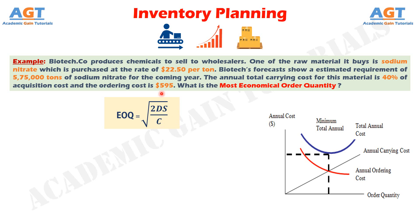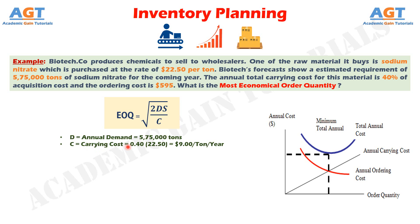Let's identify the values from the question. The annual demand D is 575,000 tonnes. The annual total carrying cost is 40% of the acquisition cost. The acquisition cost is $22.50 per tonne, so 40% of $22.50 gives us a carrying cost C of $9 per tonne per year. The ordering cost S is given directly as $595 per order.